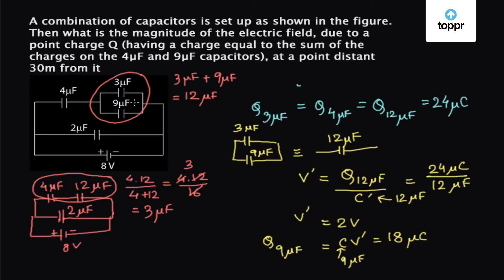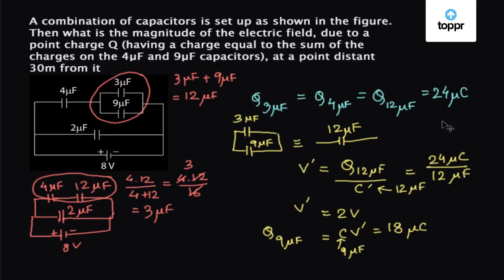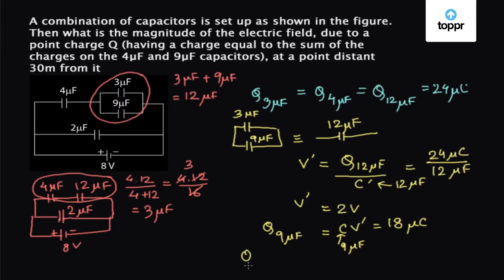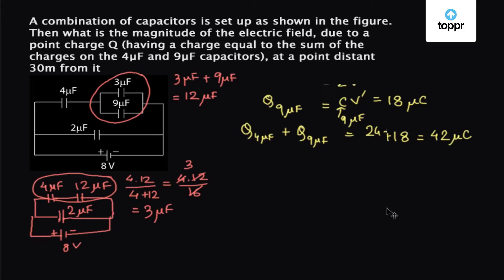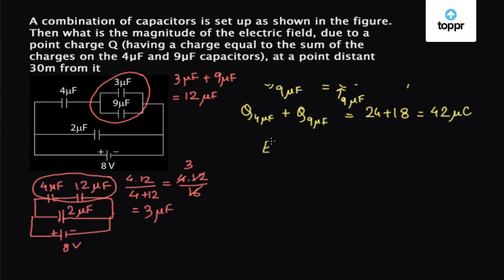Now we have the charge on the 9 microfarad capacitor, which is 18 microcoulombs, and the charge on the 4 microfarad capacitor, which is 24 microcoulombs. So the sum of both the charges comes out to be Q on the 4 microfarad plus Q on the 9 microfarad capacitor, which is equal to 42 microcoulombs. The electric field due to the charge is given by E equals KQ upon R squared, according to Coulomb's law, where Q equals 42 microcoulombs and R is given to be 30 meters.